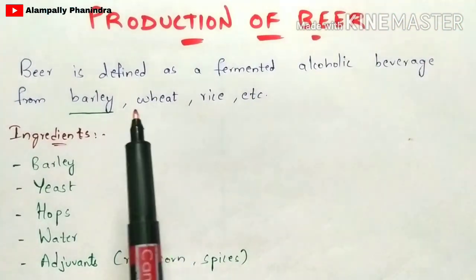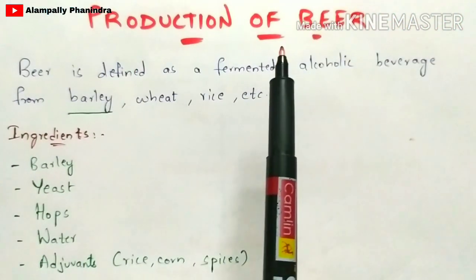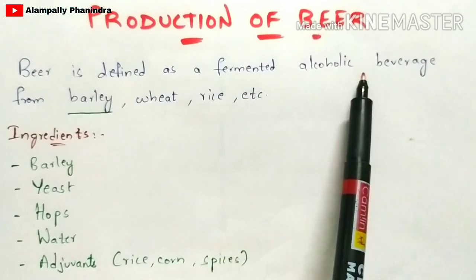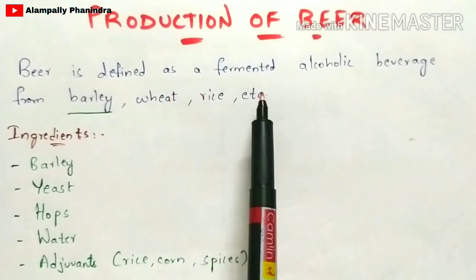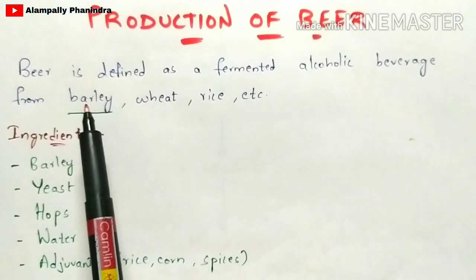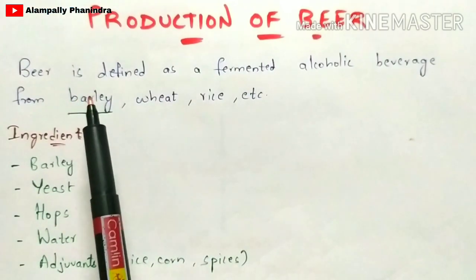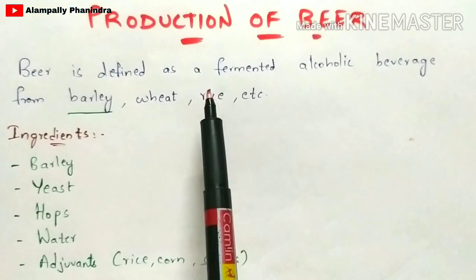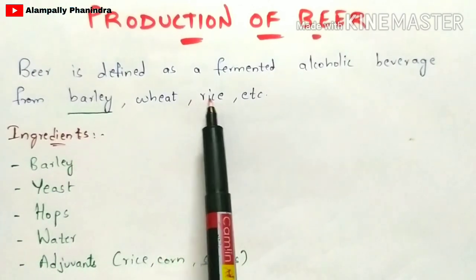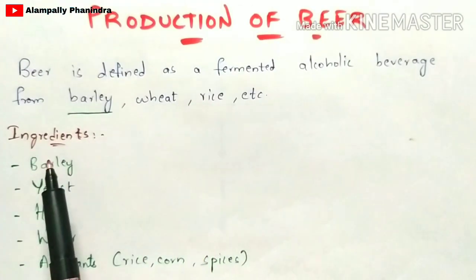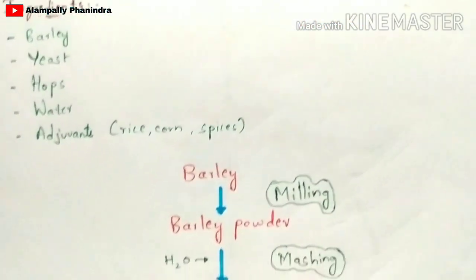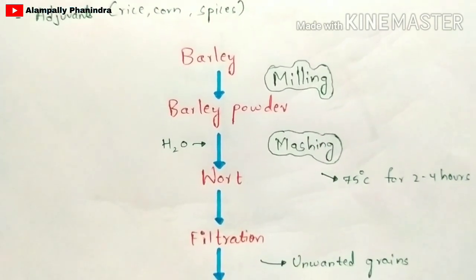In this video, let us discuss the production of beer — how beer is produced and manufactured in industries. Beer is defined as a fermented alcoholic beverage mainly produced from barley, wheat, or rice. In many industries, barley is highly used for production of quality beer. The key ingredients required are barley, yeast, hops, water, and adjuvants.